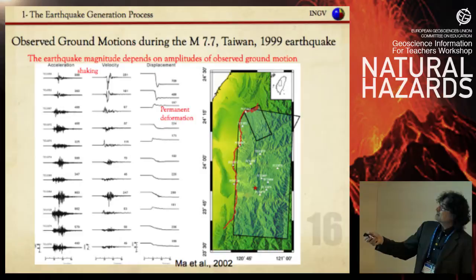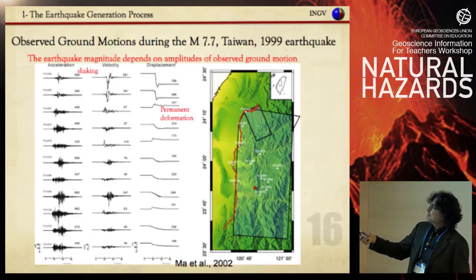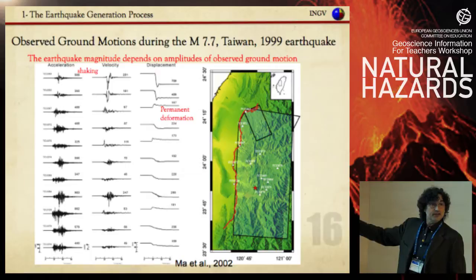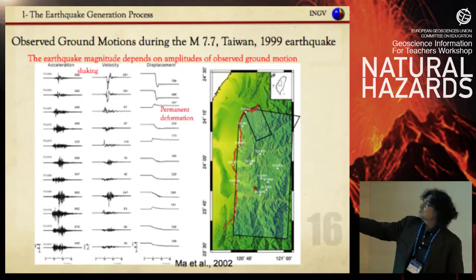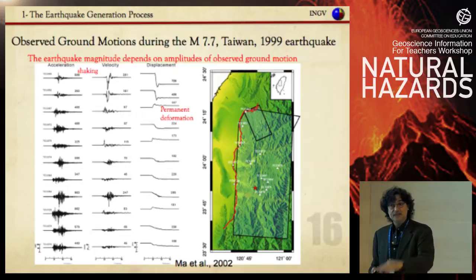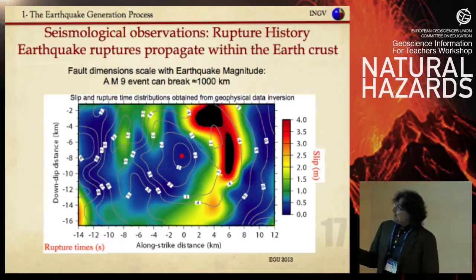Here is another example from a magnitude 7.7 earthquake in Taiwan, showing clearly the ground shaking — this is the motion of the ground — and the permanent deformation: 70 centimeters of subsidence due to the earthquake.